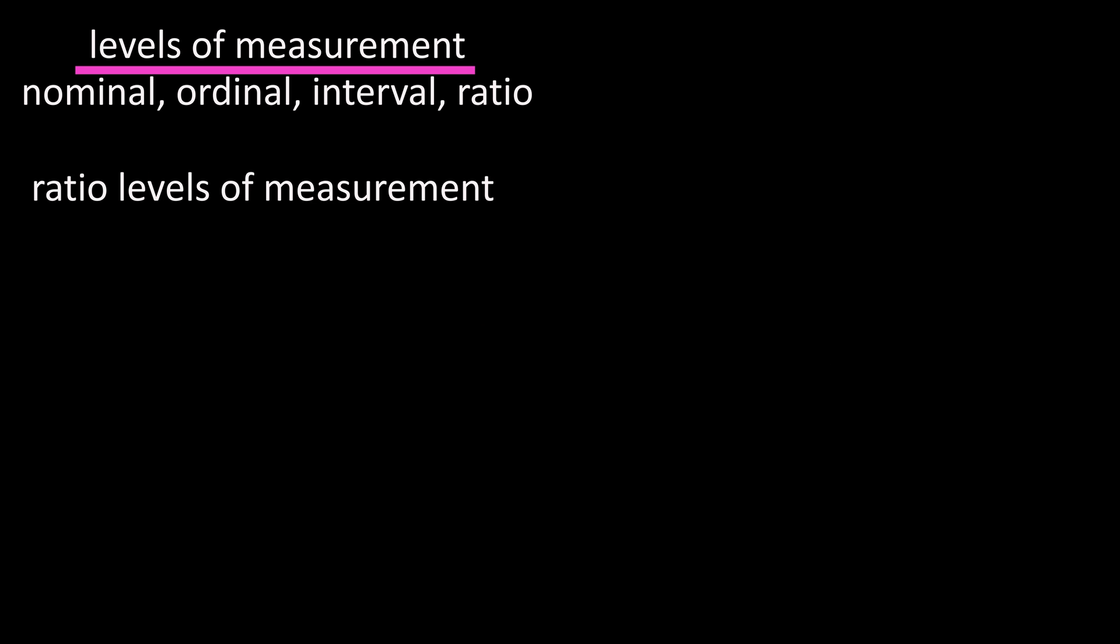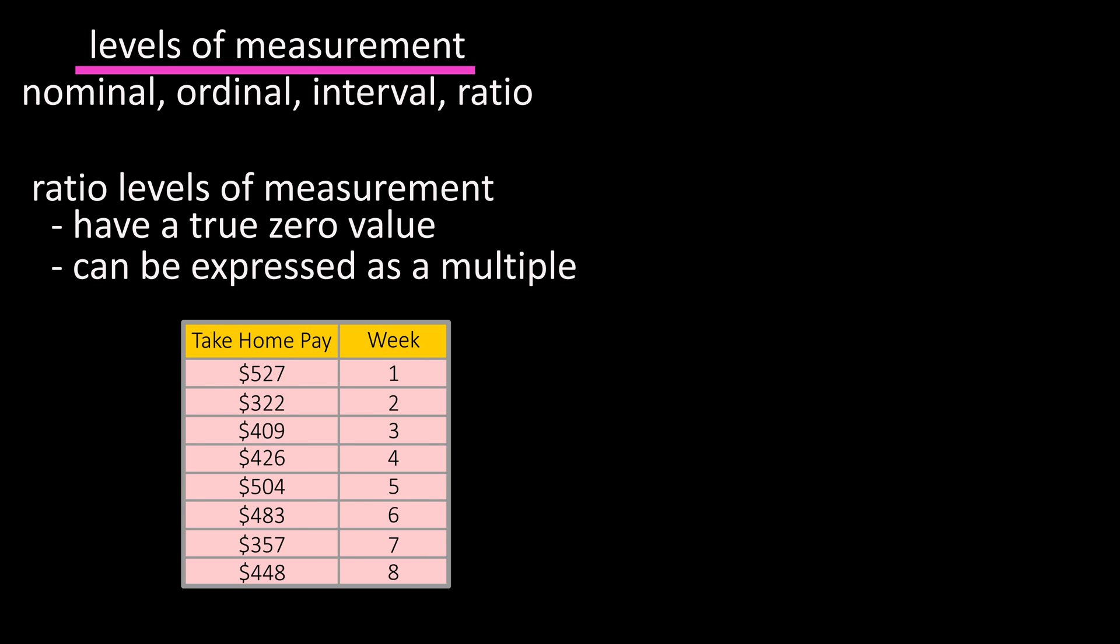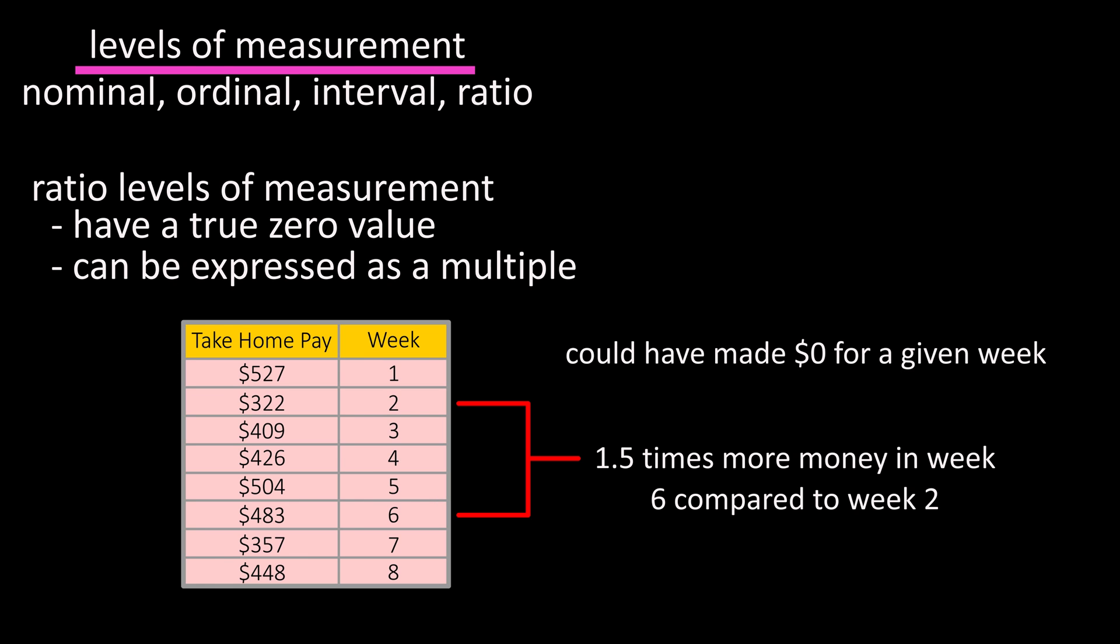Ratio levels of measurement are similar to interval levels, but they do have an inherent zero meaning none, and one data entry can be meaningfully expressed as a multiple of another. So if your take-home pay for the last eight weeks was listed in this table, you could say you made 1.5 times as much money in week six than you did in week two, and there is an absolute zero that exists and is meaningful, because you could have made zero dollars for a given week.